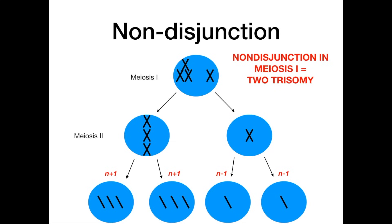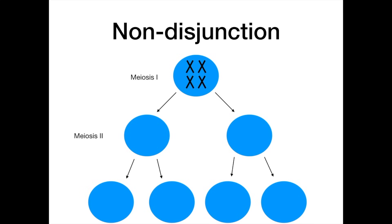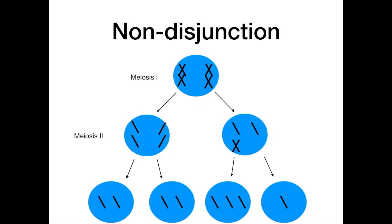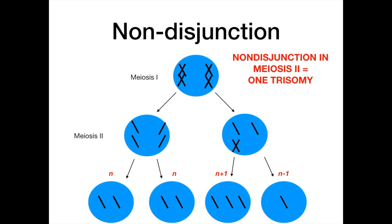But what happens if you get non-disjunction in meiosis 2? In this case, the first split occurs properly — homologous chromosomes align across the meiotic spindle and separate normally in anaphase of meiosis 1. Now in meiosis 2, the chromosomes come to the meiotic spindle and should separate into sister chromatids. But if the cell on the right cannot pull apart those sister chromatids properly, the result is: N and N on the two cells on the left, and N+1 and N-1 for the two cells on the right. So non-disjunction in meiosis 2 gives one cell with trisomy.